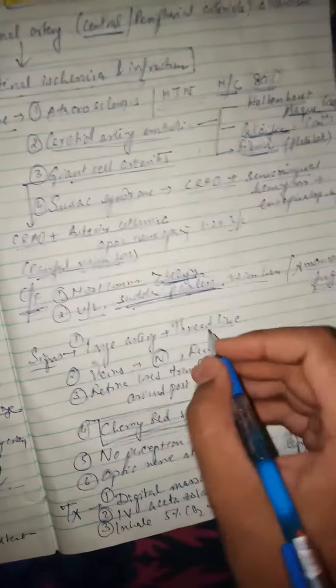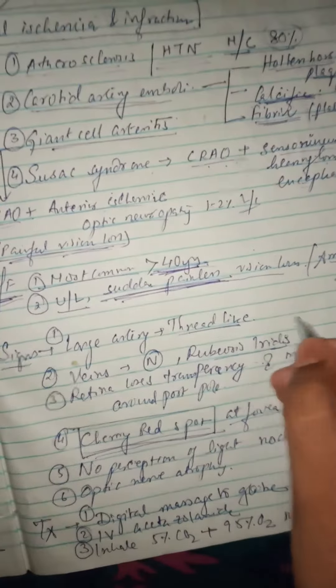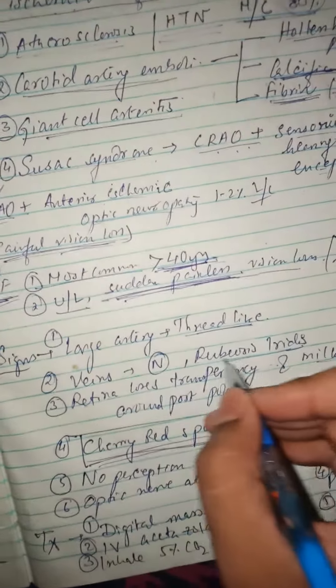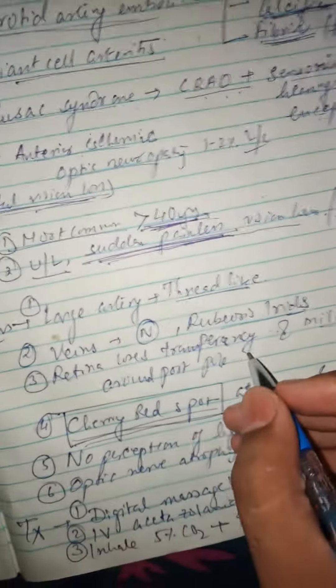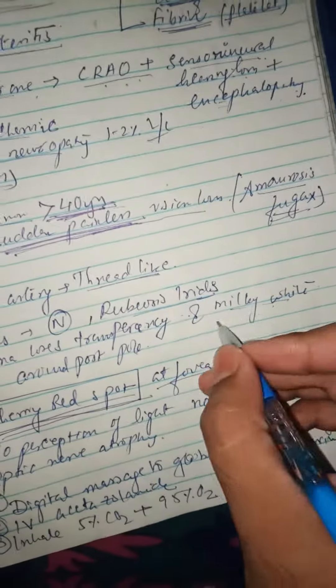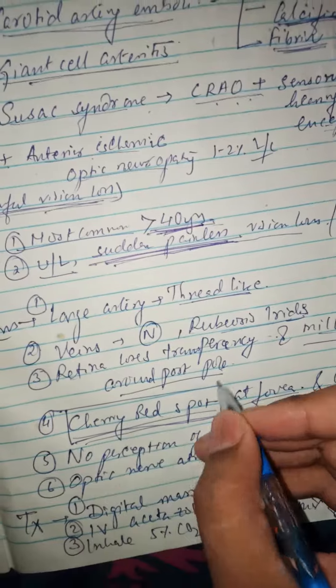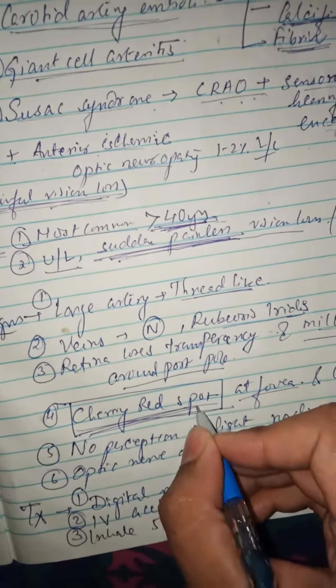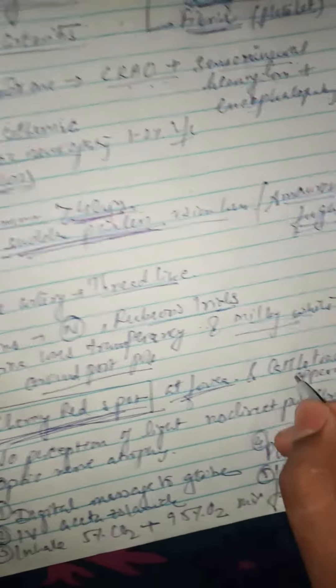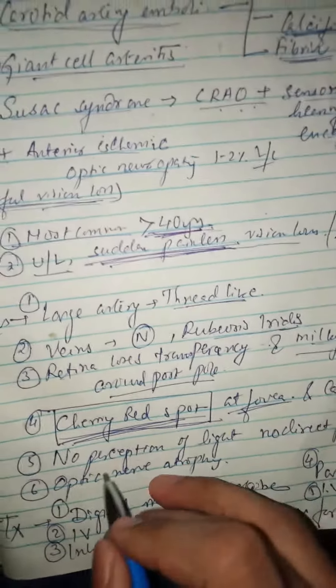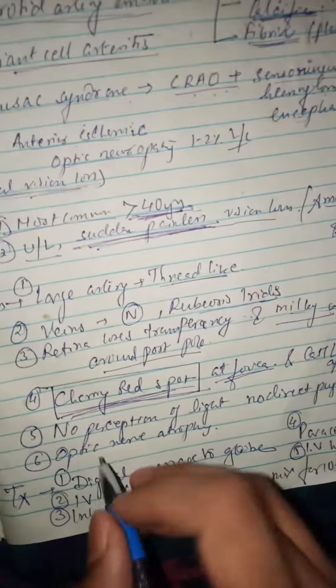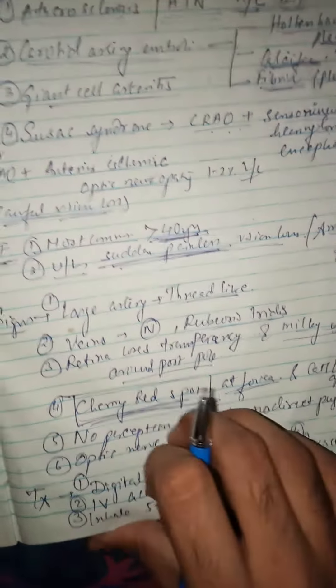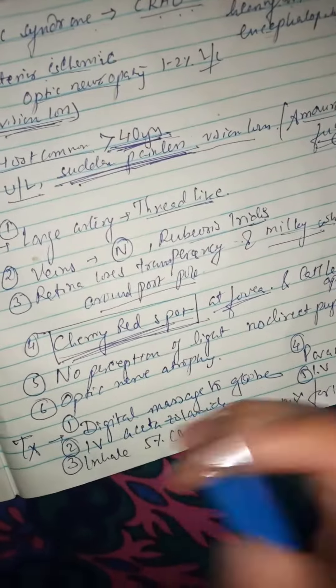What are the signs? Large arteries are thread-like. Arteries are not visible. Veins are normal. Rubeosis irides is seen. Retina loses its transparency and becomes milky white in color around the posterior pole. Cherry red spot is seen, which is very important. Cattle track appearance at the fovea. No perception of light. No direct pupillary reflex is seen. Optic nerve atrophy is seen.